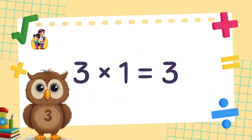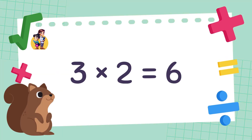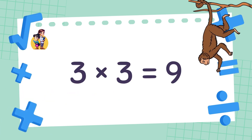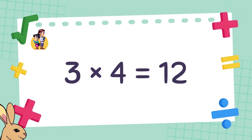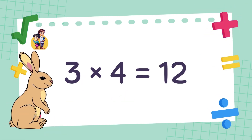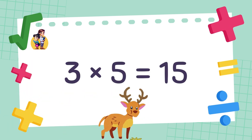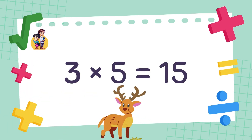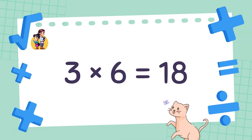3 times 1 is equal to 3. 3 times 2 is equal to 6. 3 times 3 is equal to 9. 3 times 4 is equal to 12. 3 times 5 is equal to 15. 3 times 6 is equal to 18.